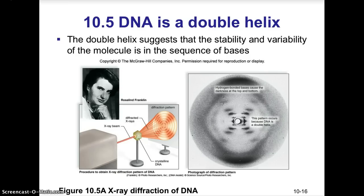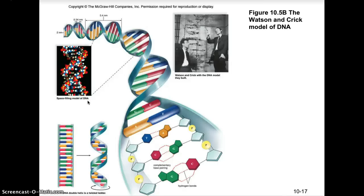DNA is a double helix; its stability and variability lie in the sequence of bases. In the early 1950s, one key piece of evidence for the double helix structure was X-ray crystallography performed by Rosalind Franklin, who never received a Nobel Prize as she passed before receiving credit. James Watson and Francis Crick received the Nobel Prize for describing the structure of DNA, how it stores hereditary information, and how it can be replicated.